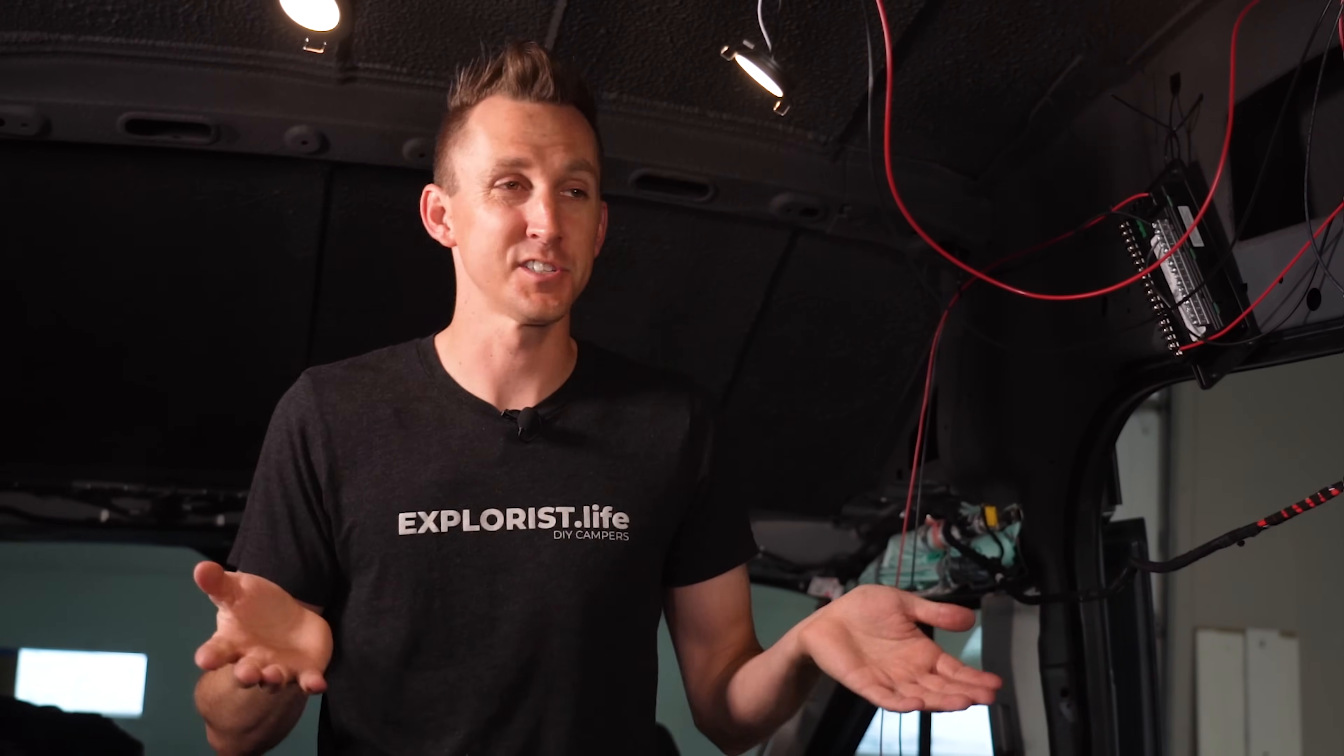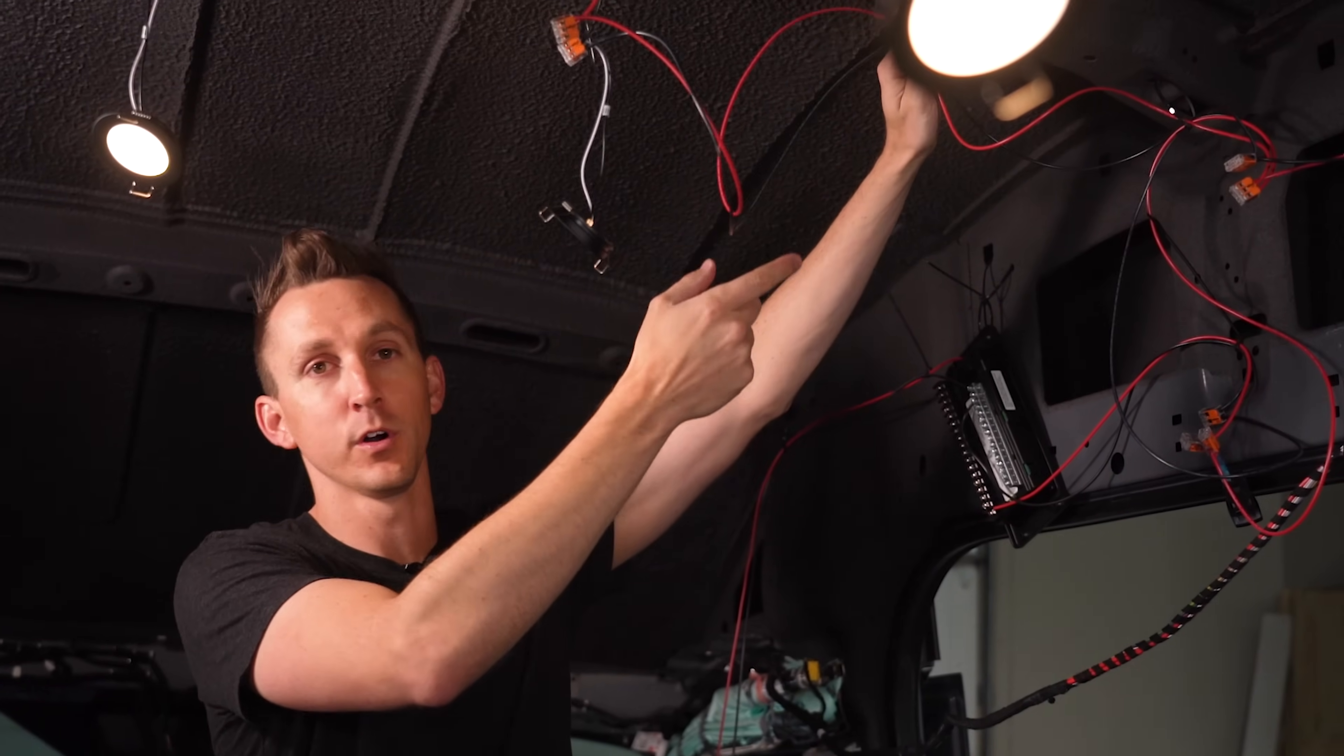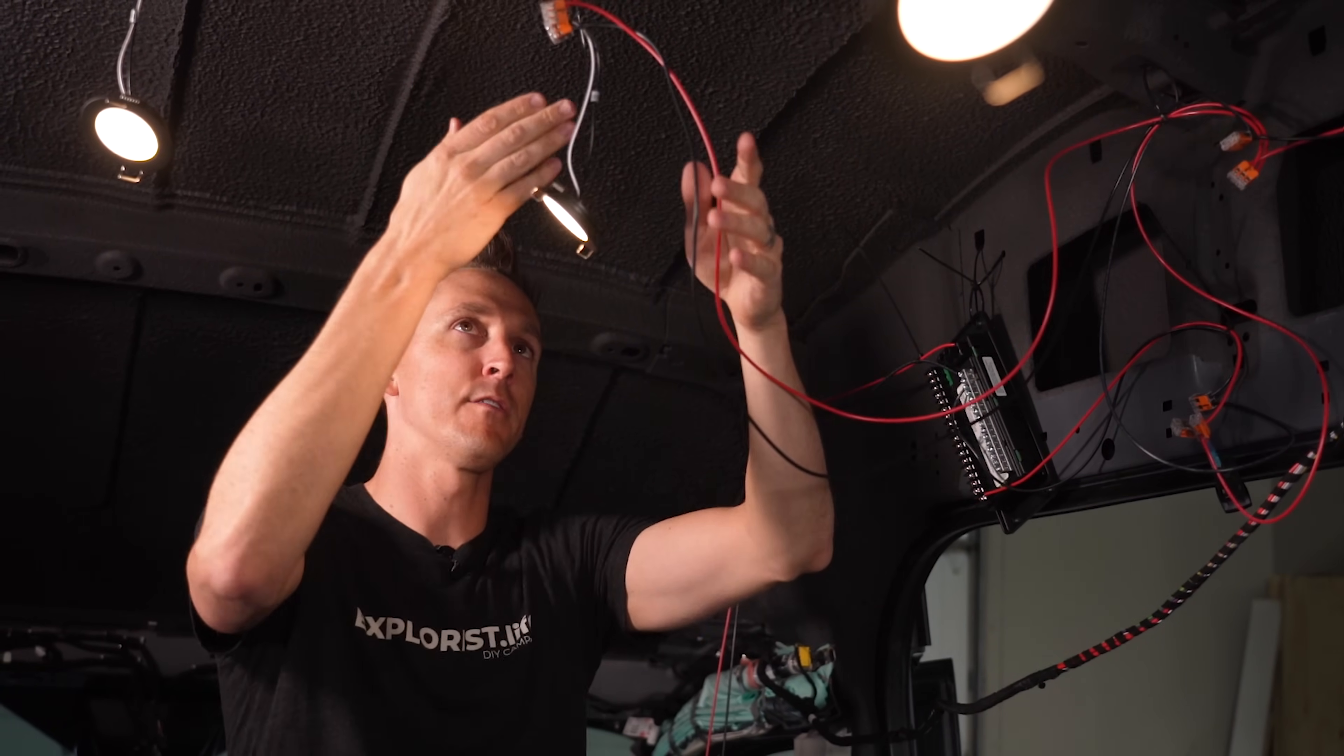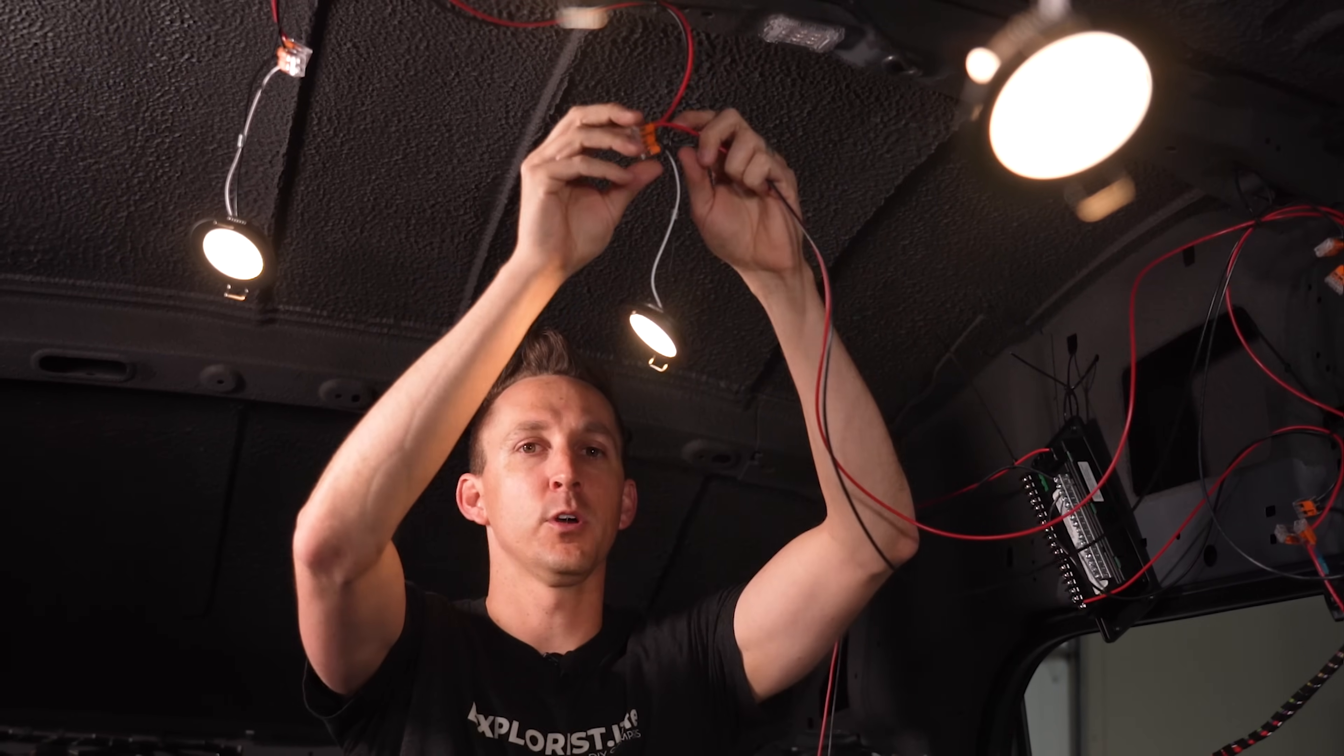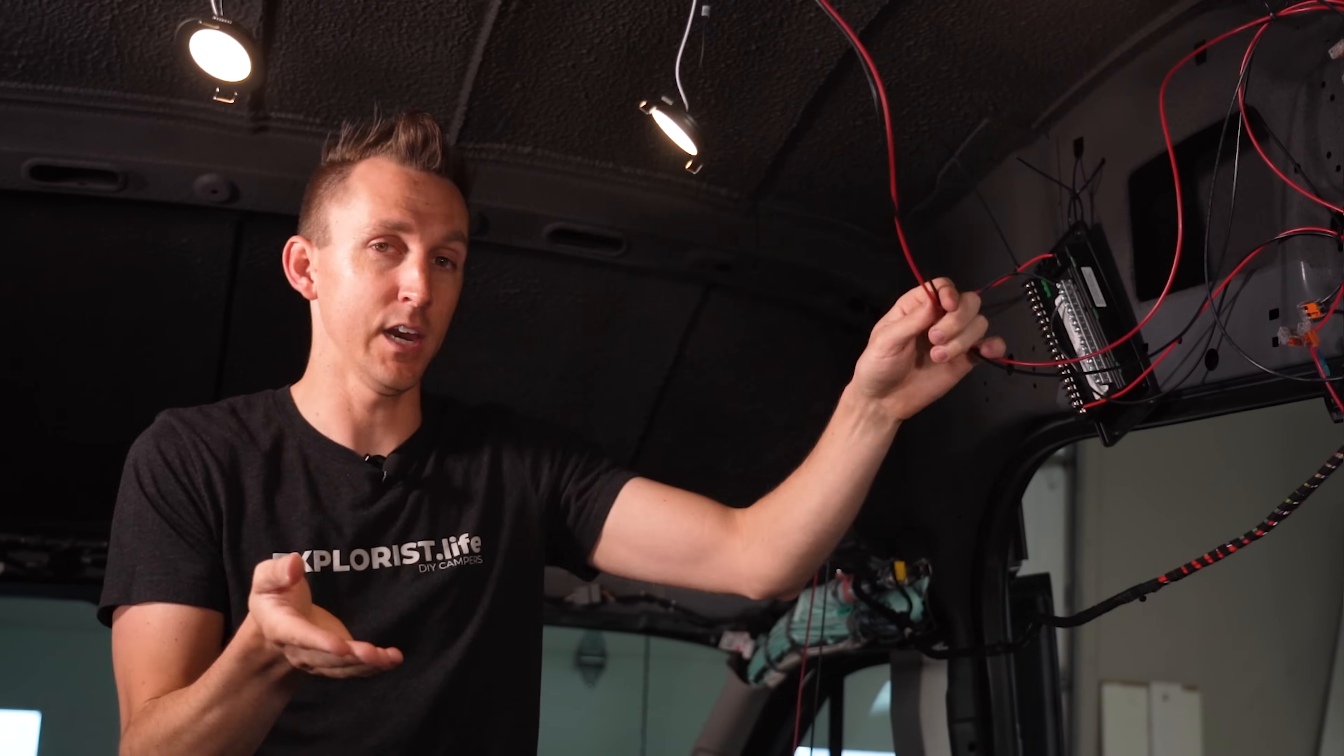So three other thoughts and considerations I wanted to talk about before we wrapped up this video. The first one is wire management. So we did leave a bit of slack on some of these wires that will get trimmed off eventually. You know, you want all this stuff to be nice and neat. And the great thing about these lever nuts is to trim off the wire. You're ultimately just disconnecting the lever nut, pulling the wire out, trimming the wire, re-stripping it, and then putting it back into the lever nuts. You're not having to re-crimp or heat shrink anything like that. So that's going to take care of a lot of the slack that we have going on here, but we're not going to do that in this video.